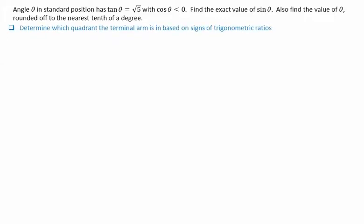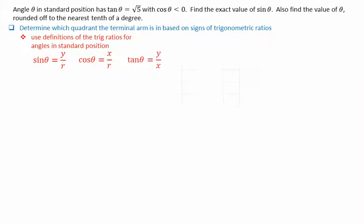First, determine which quadrant the terminal arm is in, based on the signs of the trigonometric ratios. We can use the definitions for the trig ratios for angles in standard position. Sine theta equals y over r, cos theta equals x over r, and tan theta equals y over x.